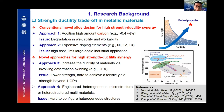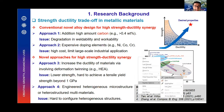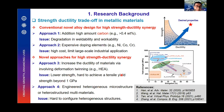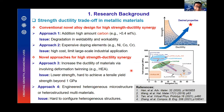For high entropy alloys, although very high elongation can be achieved, the yield strength is normally below 1 GPa, as shown in the figure. Another approach is engineered heterogeneous structures or heterostructured multi-materials, but it is hard to control the heterogeneous structures, and there will be anisotropy along different directions.